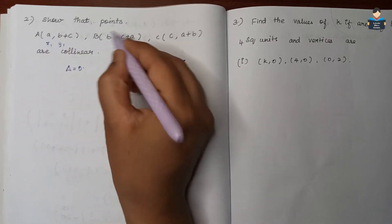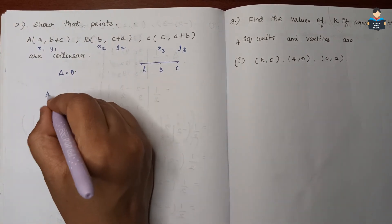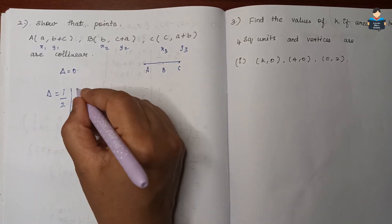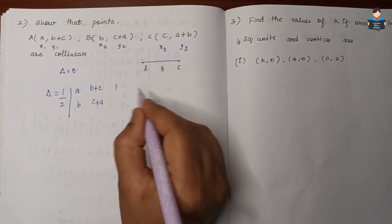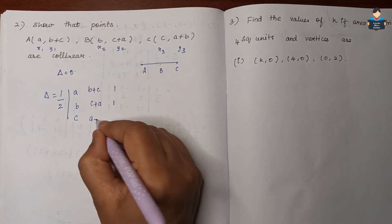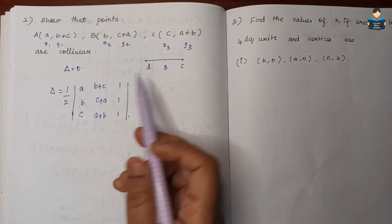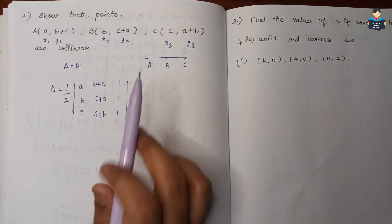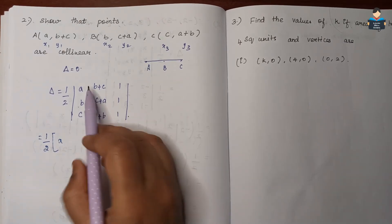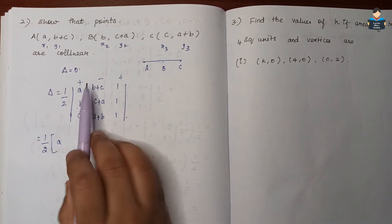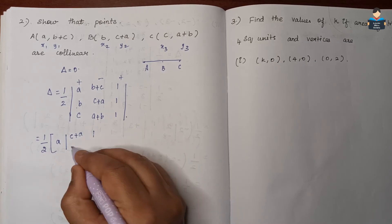So if we substitute: x1 y1, x2 y2, x3 y3 as (a, b+c), (b, c+a), (c, a+b) with each row having 1. We can solve this using elementary transformations or as a normal determinant. So half, expanding along the first row with plus minus plus signs, we omit the first row and first column to get the minor: c+a 1 / a+b 1. Minus b+c times the minor: b 1 / c 1. Plus 1 times the minor: b c+a / c a+b.